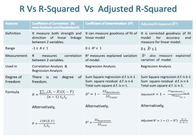The Sum of Squares Regression degree of freedom is k minus 1, the Sum of Squares Residual degree of freedom is n minus k, and the Total Sum of Squares degree of freedom is n minus 1.